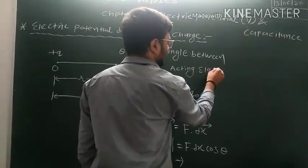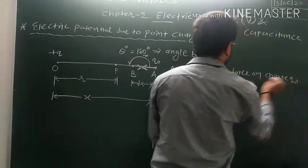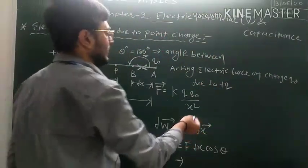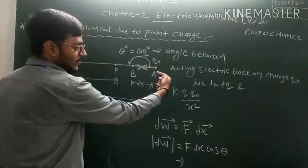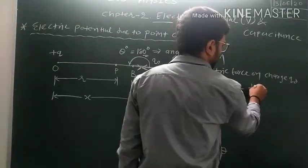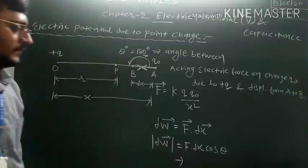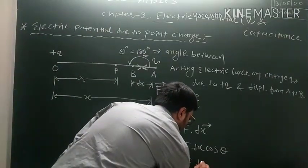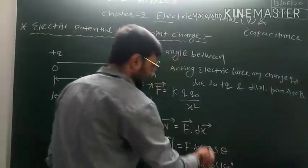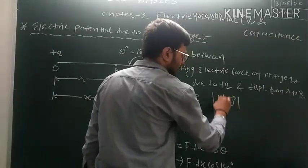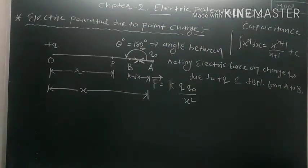The angle between the electric force acting on charge Q₀ due to positive charge plus Q and the displacement from A to B is 180°. Since cos 180° equals minus one, we finally get dW equals minus F into dx.